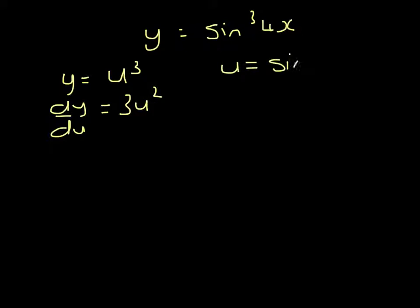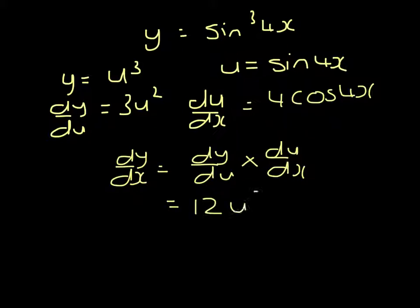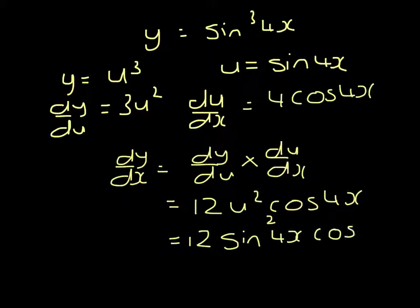U equals sin 4X. Differentiating that, du/dx is 4 cos 4X. The chain rule states that dy/dx would be dy/du multiplied by du/dx. So that's 12U squared cos 4X. Replacing the U by sin 4X, so 12 sin squared 4X cos 4X.